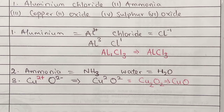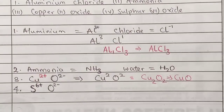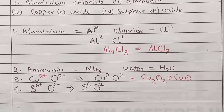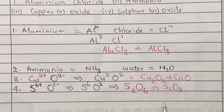For sulfur(VI) oxide: the symbol for sulfur is S, and since it says sulfur 6, the oxidation state is +6. Oxygen is the oxide with an oxidation state of minus 2. Changing to valence and applying criss-cross: the 6 from S goes to O and the 2 from O goes to S, giving S2O6. Since both 2 and 6 are divisible by 2, we simplify: 2÷2 = 1 (written as S) and 6÷2 = 3, giving SO3.